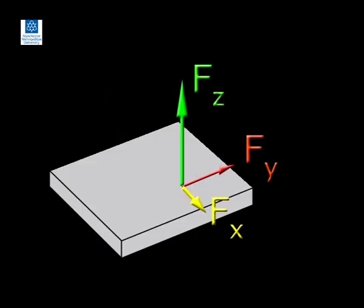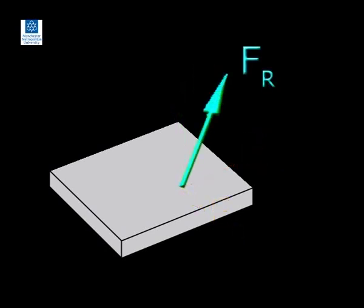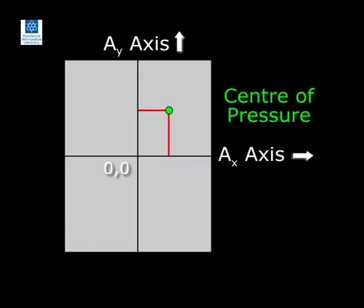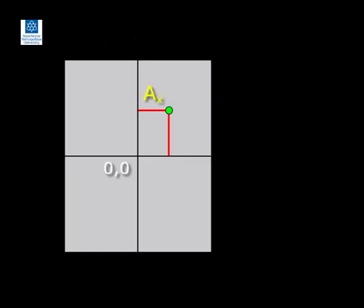The centre of pressure is the location of the resultant ground reaction force vector in relation to the centre of the force plate. The specific location of the centre of pressure is provided by AX and AY, which are its coordinates along the X and Y axes of the plate.